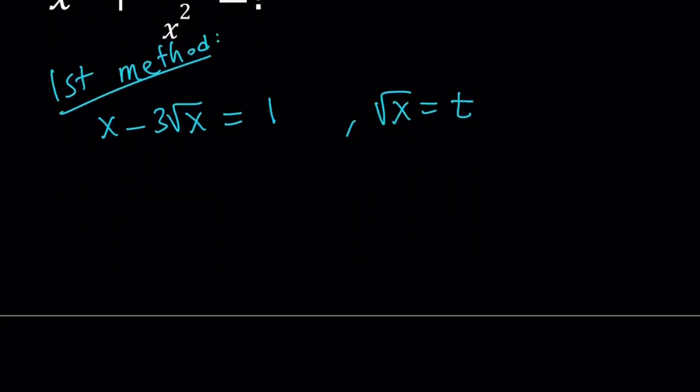So we can write this as t squared minus 3t minus 1 equals 0. This is a quadratic equation. One thing to be careful about is x needs to be greater or equal to 0, and t needs to be greater than or equal to 0, because we said that x is going to be a real number. Under those conditions, I can just go ahead and solve this using the quadratic formula.